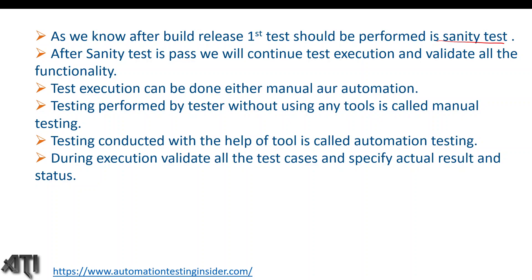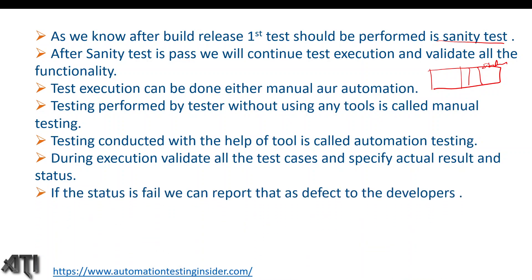During execution, validate all the test cases and specify the actual result and status. In the test case document we have the expected result, actual result, and a status column where we mark pass or fail based on whether the test case matches the expected result. If the status is failed, we report that as a defect to the developer using a defect report template or a defect tool, if the actual result doesn't match the expected result.